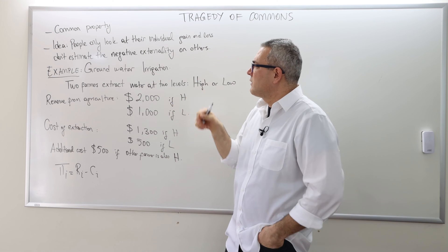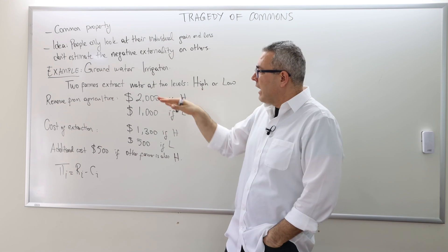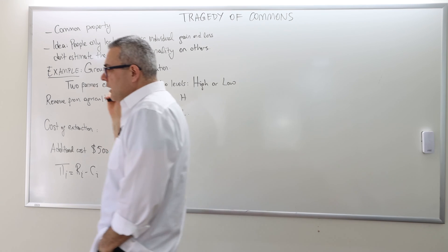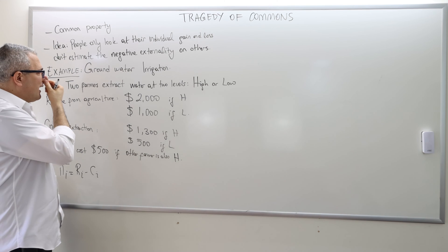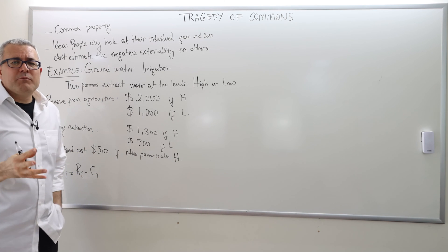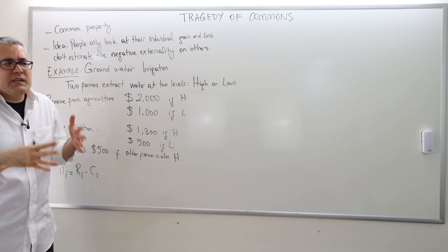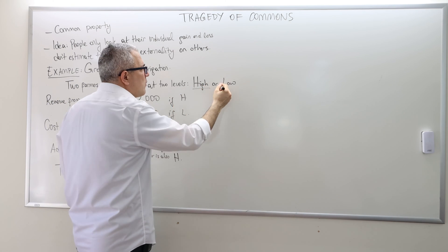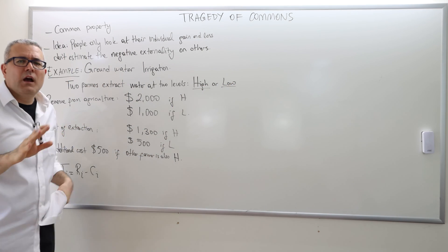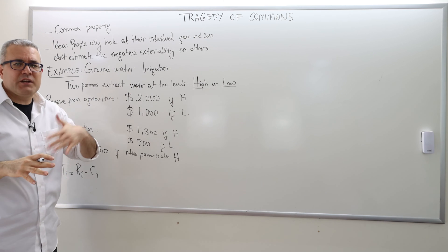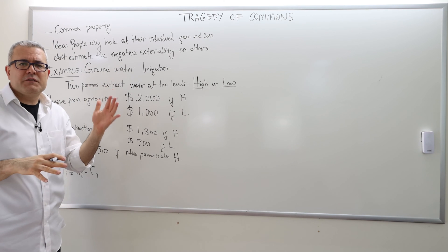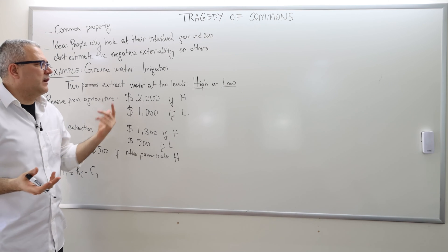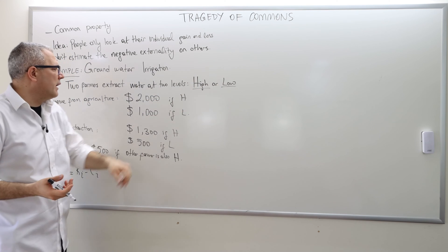Let's talk about the groundwater irrigation. There are two farmers, and they extract water at two levels for simplicity. They either extract a high amount of water or a low amount of water. Obviously the amount of water extraction is a continuous variable, but for simplicity it's a one or zero kind of thing — you either choose low or high.